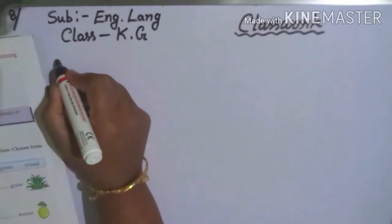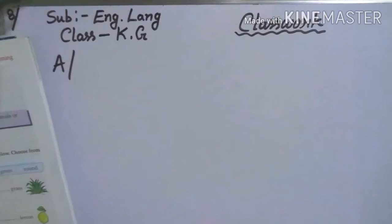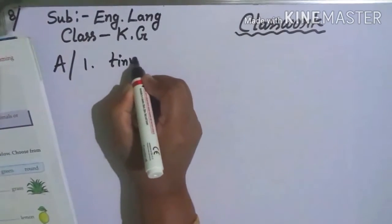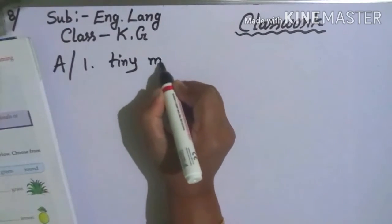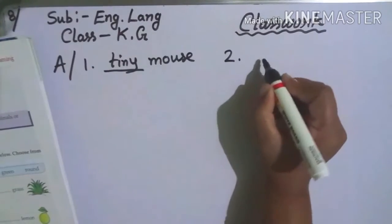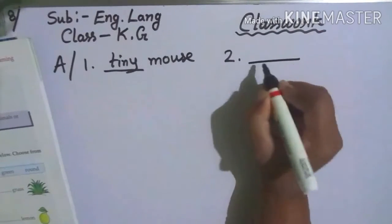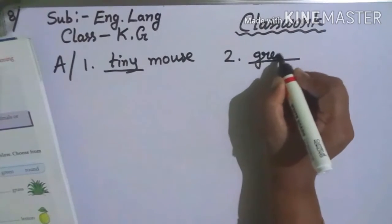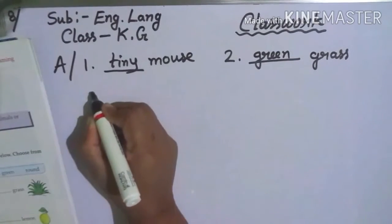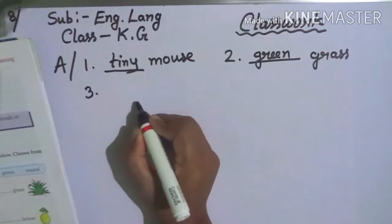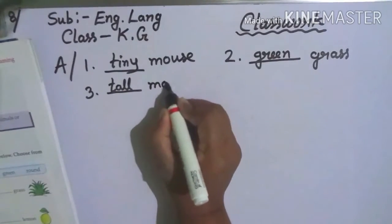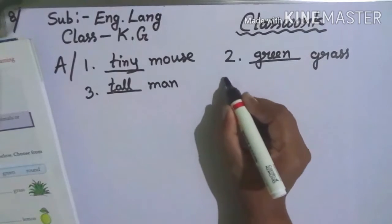Follow me everyone. Answer is: Number one, tiny mouse. Number two, green G-R-E-E-N grass. Number three, tall man.